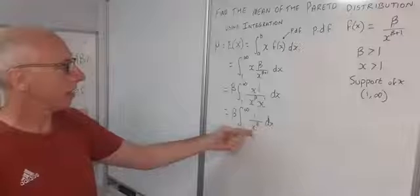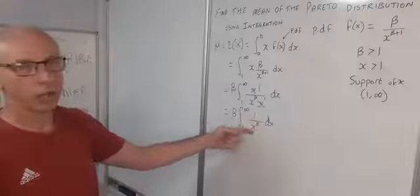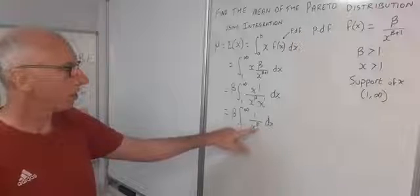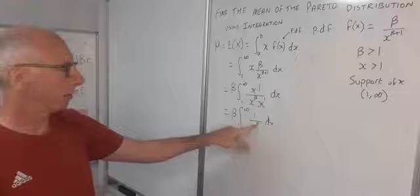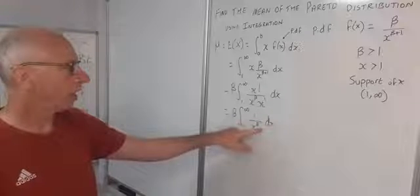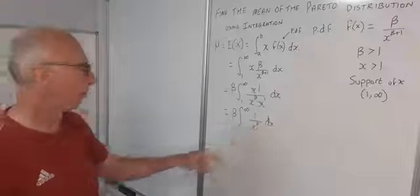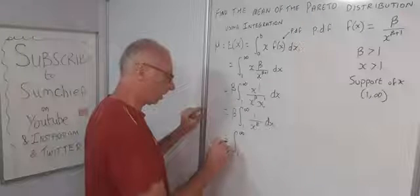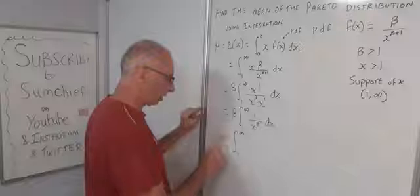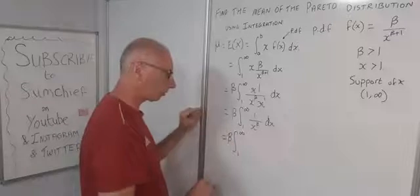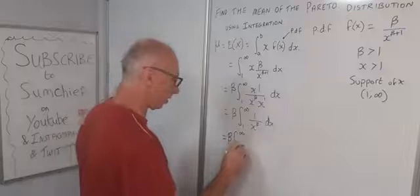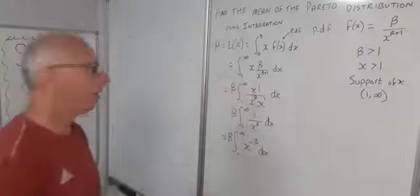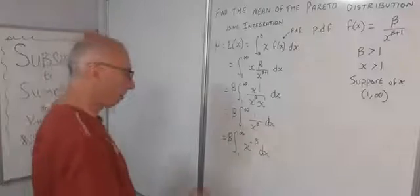To avoid working with a fraction, I rewrite 1 over x to the β as x to the negative β, bringing it up into the numerator so the denominator becomes 1. The integral is now from 1 to infinity of β times x to the minus β dx.